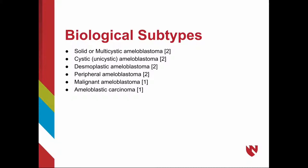The biological subtypes are solid or multicystic ameloblastoma, unicystic ameloblastoma, desmoplastic ameloblastoma, and peripheral ameloblastoma. A malignant ameloblastoma is one found at a location other than the jaw, and an ameloblastic carcinoma is an ameloblastoma that shows cancerous changes.